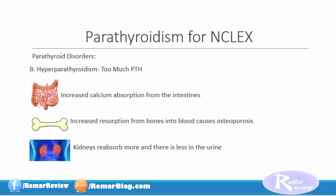Well, what about hyperparathyroidism? Let's go to the other side where there's too much of the parathyroid hormone. So what's happening now is you have an increased calcium absorption from the intestines. Also, there will be an increased resorption from the bones, which actually means that the calcium will be leaving the bones, going into the bloodstream, which can cause osteoporosis. And we have the kidneys reabsorbing lots of calcium, so you will see less in the urine, but this is going to cause another problem for our patients.